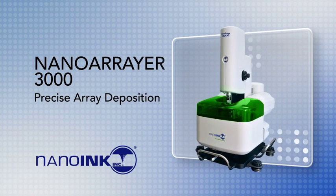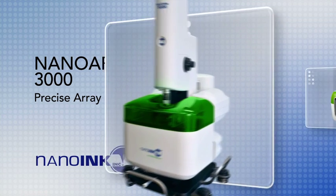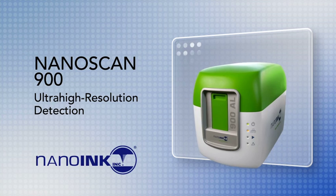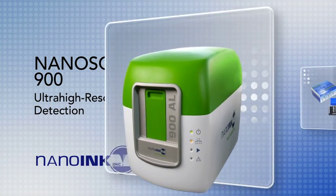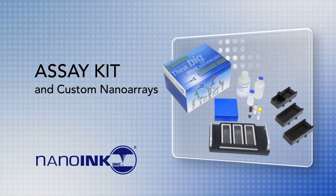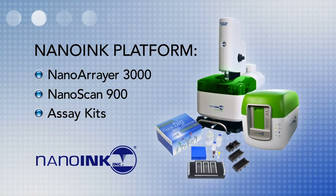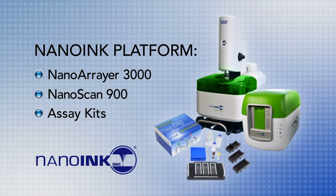The NanoArrayer 3000 deposits arrays with exquisite precision and the NanoScan 900 detects them with ultra-high resolution. Leveraging these nanoarray assay system capabilities, a full line of assay kits and custom nanoarrays, the NanoInk platform can detect and quantitate even low-abundance protein biomarkers.